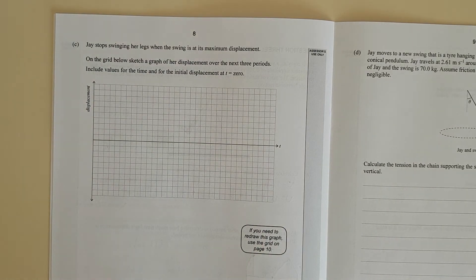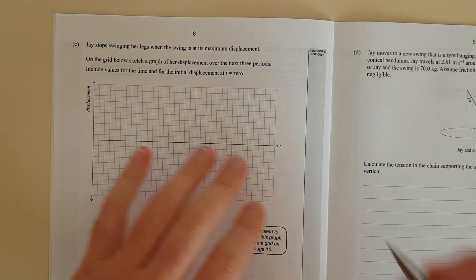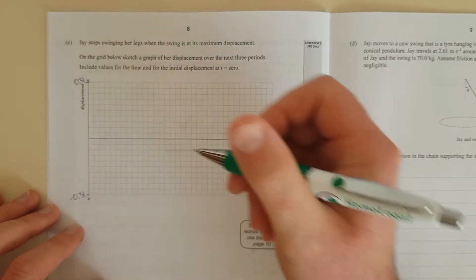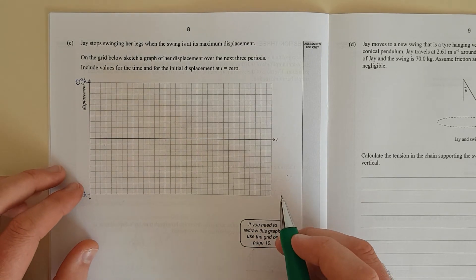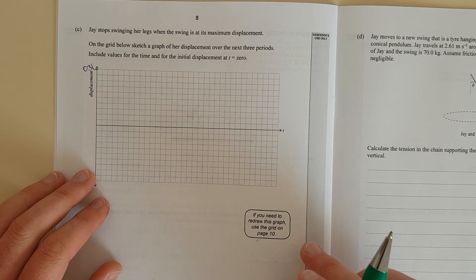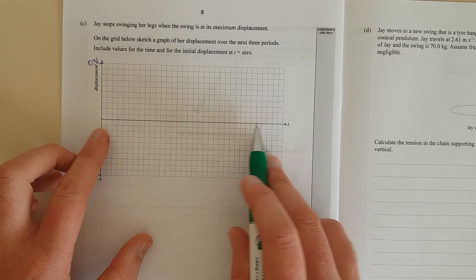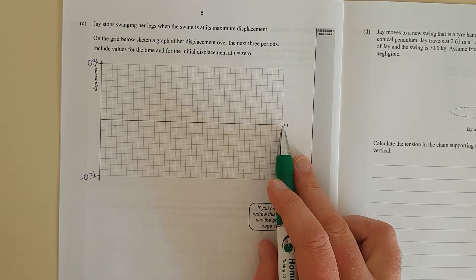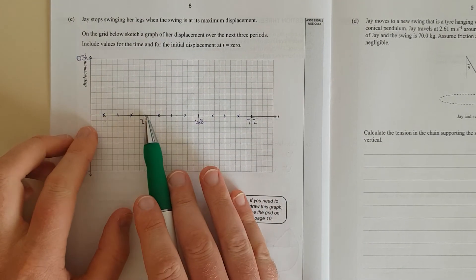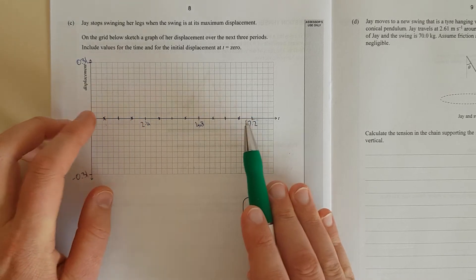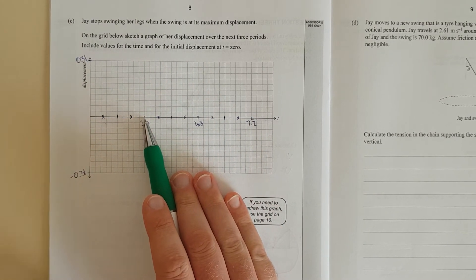Next question. J stops swinging her legs when the swing is at maximum displacement. On the grid below, sketch a graph of displacement over the next three periods. Include values of time and initial displacement. So, I'm going to mark up here. This is maximum 0.31. This is minimum negative 0.31. I've already counted it out. So, I know every 10 spaces, I can fit 30. I've segmented it out. There are 10 squares. Then the first period done. Another 10 squares. Then the second period done. Another 10 squares. Then the third period done. And each period is 2.4 seconds. So, there's 2.4. Double that, 4.8. Add again 2.4 to that, 7.2.